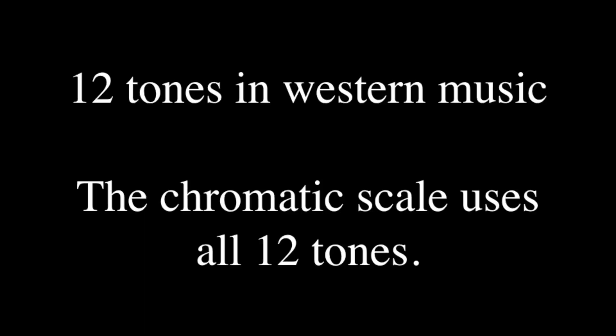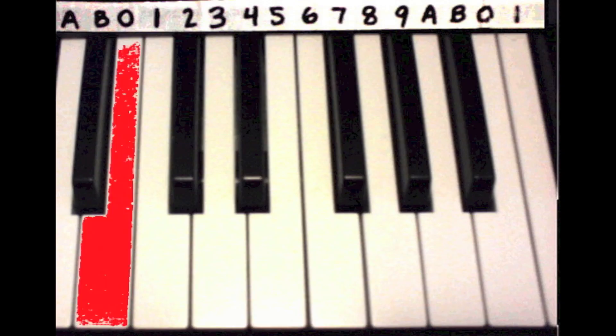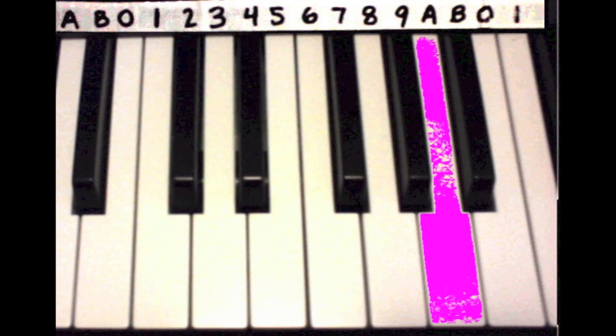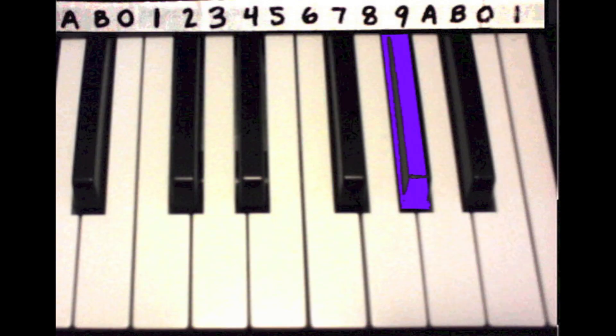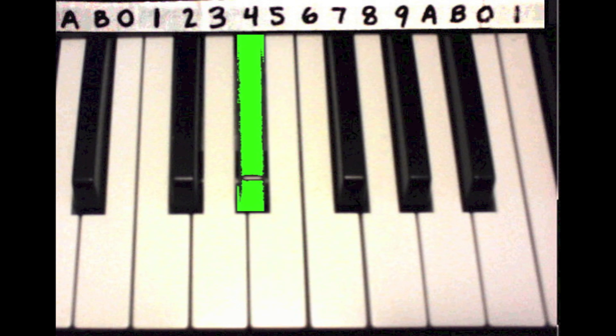There are 12 tones in the Western music system. The chromatic scale uses all of these 12 tones. The 12 tones in the octave can be labeled using the digits 0 through 9, A and B, in order to play base 12 mathematical constants.